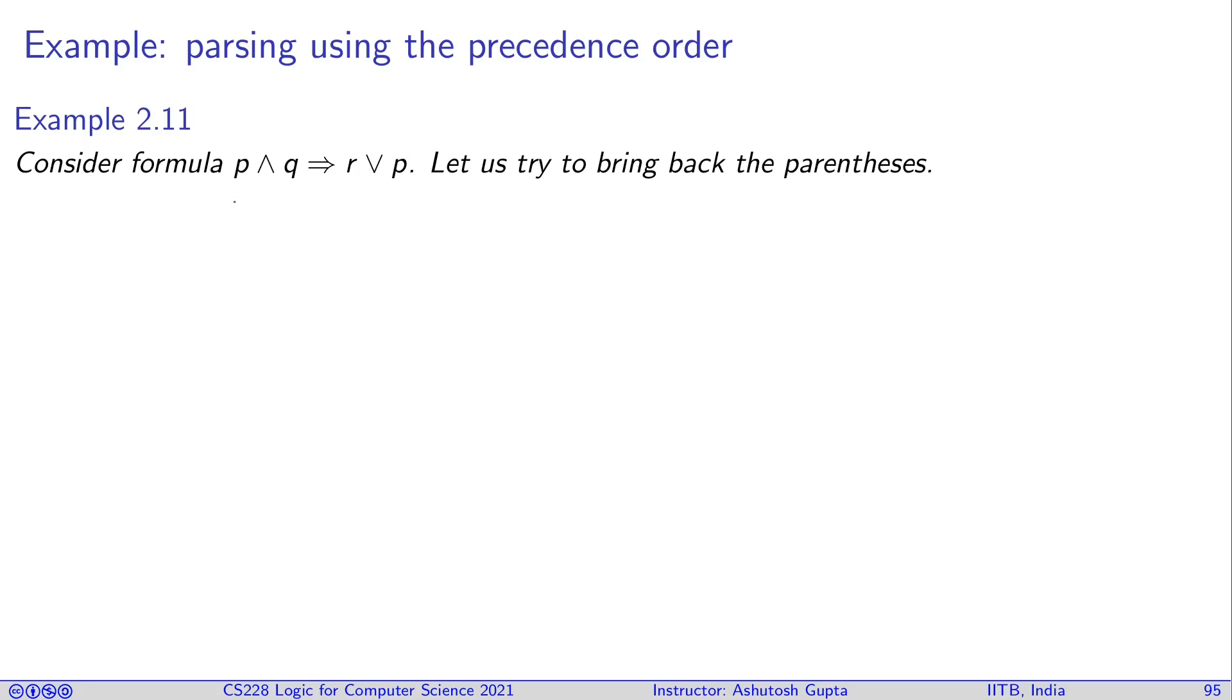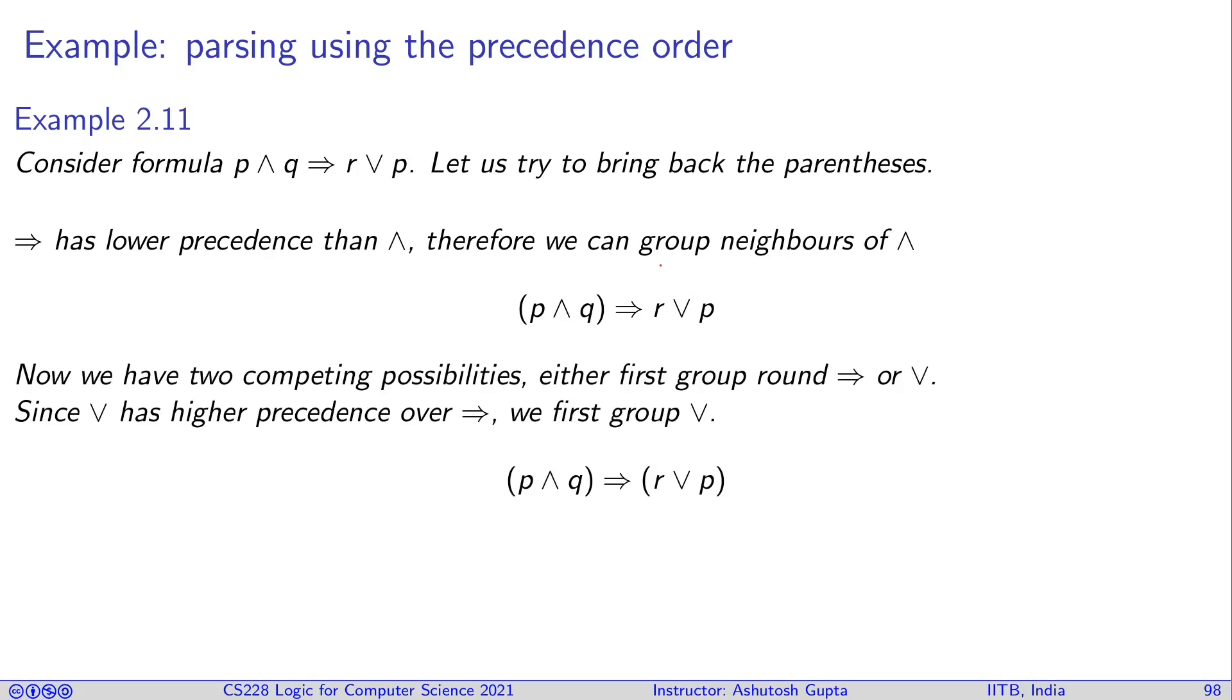So let's look at an example. Here, earlier we tried to remove the parentheses. Now let's try to add the parentheses back. In this chain, you can see that we have three binary operators, and this guy has higher precedence compared to its neighbor. So that means you can apply this parenthesis first. Then the chain is shorter, and you can put them together.